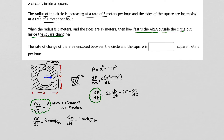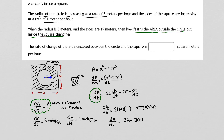It looks like I have all of these elements, so it's simply a substitution problem from here. In place of x we put 19, dX/dt is 1, r is 5, and dR/dt is 3. So the rate at which the area is changing equals 2(19)(1) minus 2π(5)(3), which gives us 38 minus 30π square meters per hour. That's it.